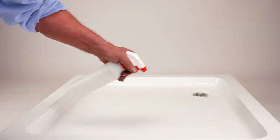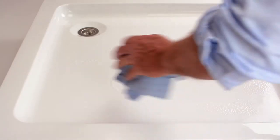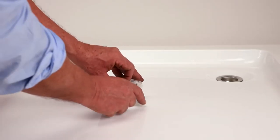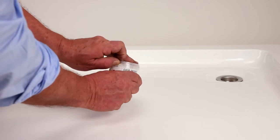First of all, remove any lime scale and dirt with a common cleaning agent. Now soak the cloth in the P promoter.